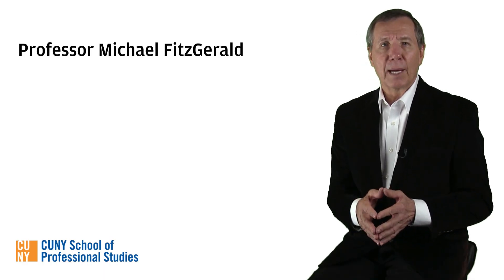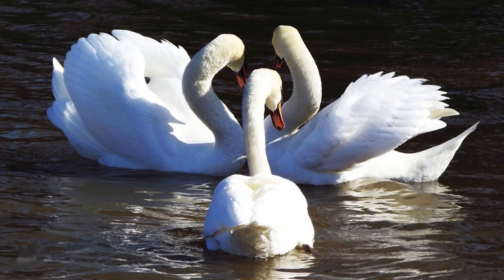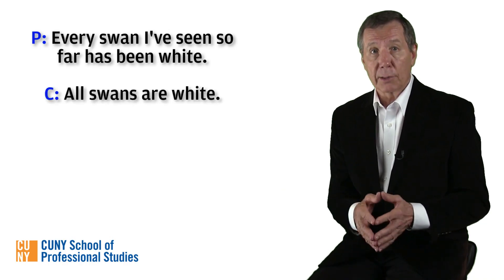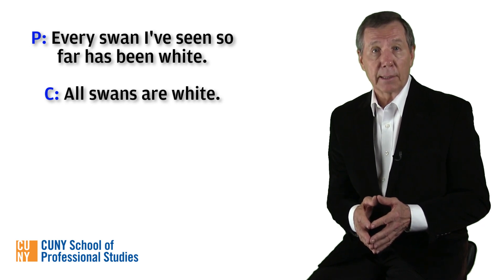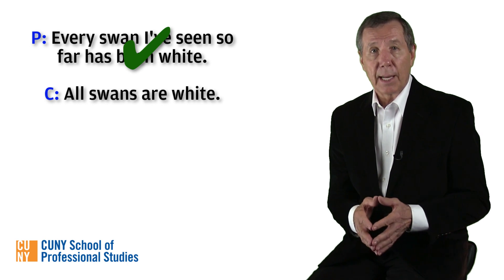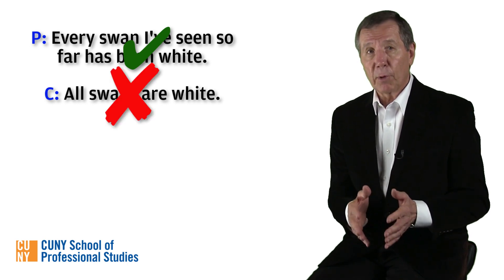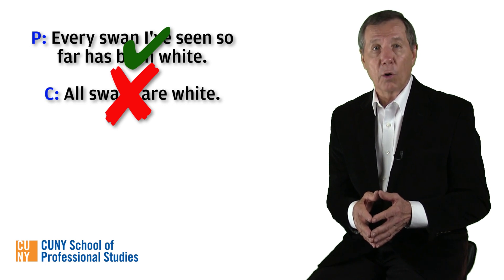We just looked at two methods for supporting the inductive generalization that all owls prey on mice. To illustrate our next point, let's use another bird example. If I argued that since every swan I have observed so far has been white, therefore all swans are white, it's clear that I'm making an inductive inference — that is, it's possible for the premise to be true and the conclusion false. Even though every swan I've seen so far has been white, I could be mistaken that all swans are white.